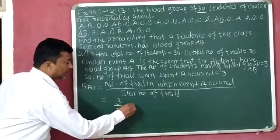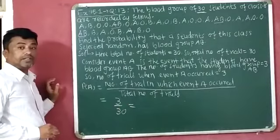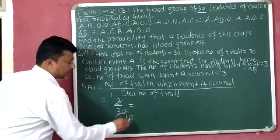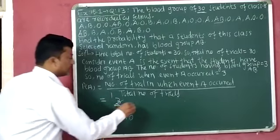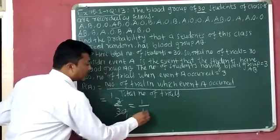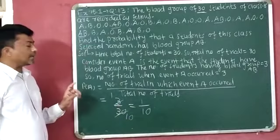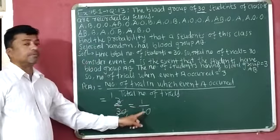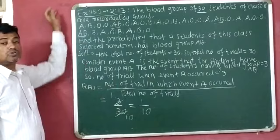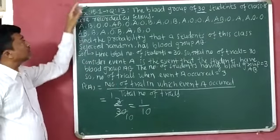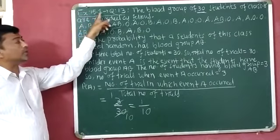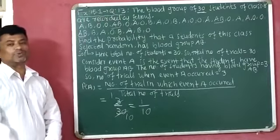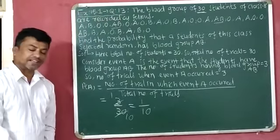So 3 divided by 30. Cancellation is possible: 3 ones are 3 and 3 tens are 30. So the final answer is 1 by 10. Probability of event A is equal to 1/10. This is the explanation of Exercise 15.1, question number 13. I hope you can understand this. Thank you.